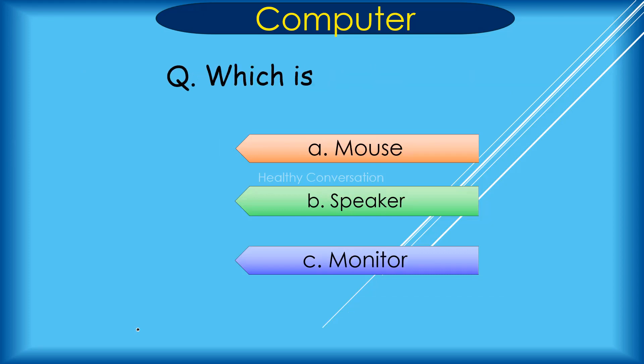Question: Which is an input device among A. Mouse, B. Speaker, C. Monitor? Correct answer is A. Mouse.